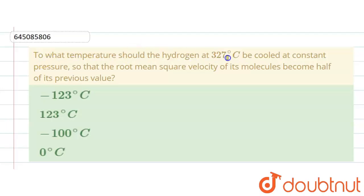To what temperature should the hydrogen at 327 degrees Celsius be cooled at constant pressure, so that the root mean square velocity of its molecules become half of its previous value? Four options are given. Now we have to check this.